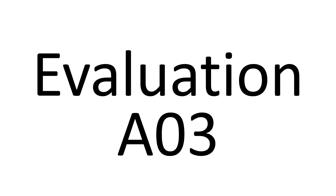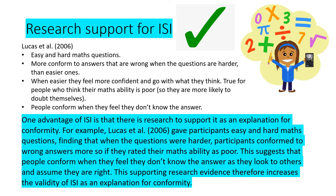I'll take you through five different evaluation points. One of the strengths from the explanations is that there is research support for informational social influence — the idea that we want to be right. The blue bit underneath is where I've written up a paragraph. What I tend to do is make points from the textbook first and then put it into a PEE paragraph: point, evidence, explanation, then link back by saying 'therefore this shows' or 'therefore this is supporting.'